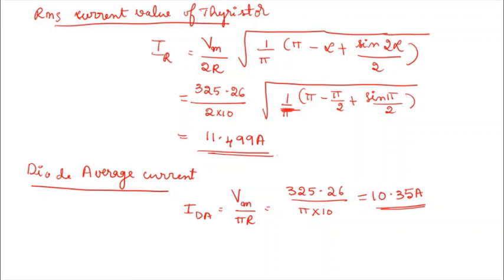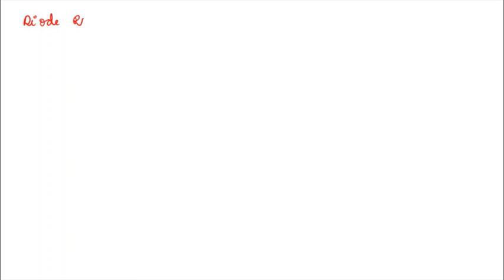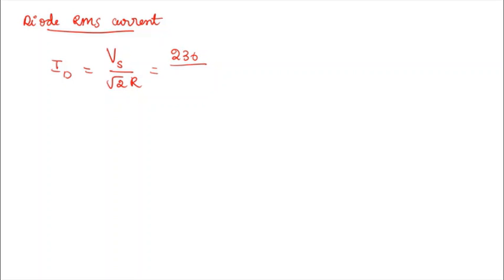Next, they have asked for diode RMS current. Diode RMS current is given by Vs divided by root 2 into R. Vs is 230, so 230 divided by root 2 into 10, which gives 16.26 amps.